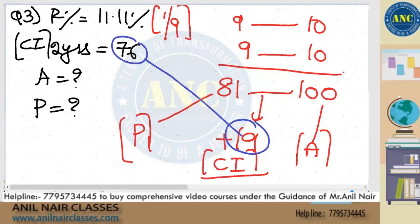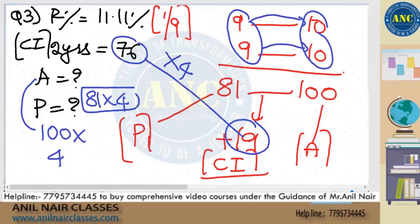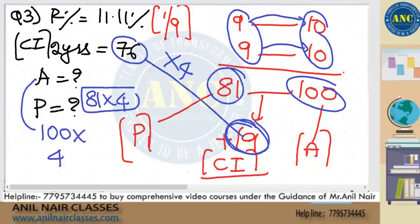Here the CI is 19 but according to the question it is 76. So 19 × 4 = 76. Amount is 100 × 4 = 400, and the principal is 81 × 4 = 324. Our percentage is 11.11%, so on 9, one increase becomes 10. One after the other for 2 years: 9×9 = 81, 10×10 = 100. Extra CI is 19. Since the question gives 76, multiply by 4 — principal is 324 and amount is 400.